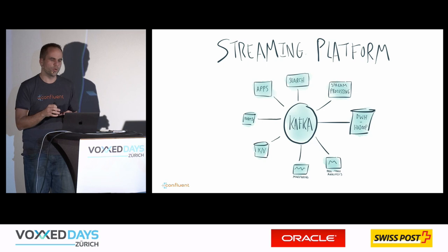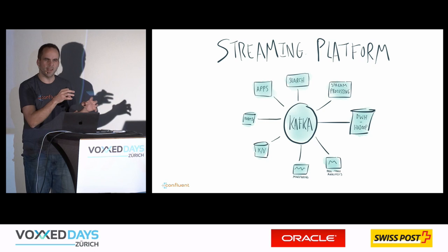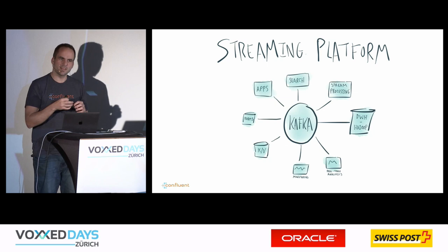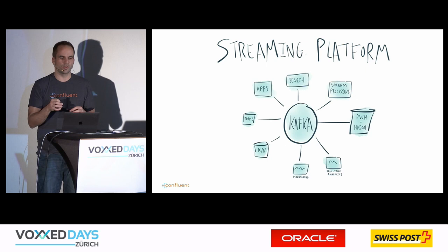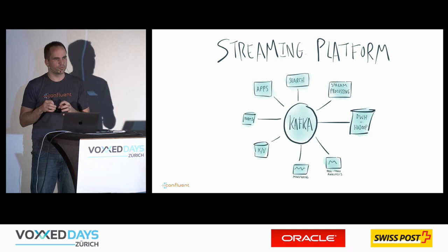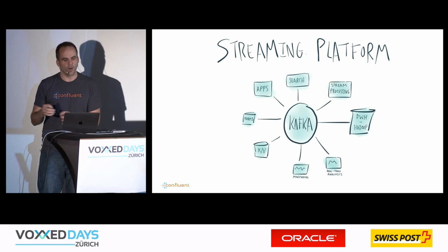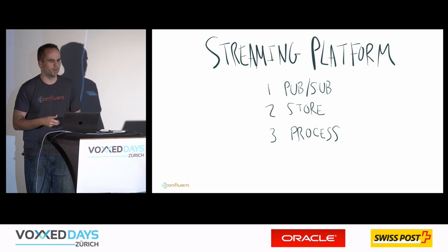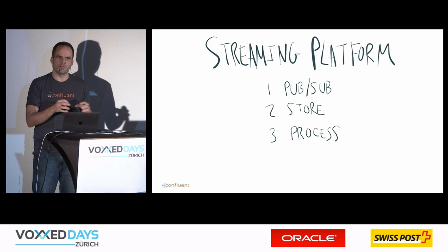That's why we talk about a streaming platform — it's much more than just messaging. You can message, store, and process data in Kafka, and then integrate with any kind of system. It's not just for Hadoop or Spark. Many customers, especially banks and insurance companies, use Kafka to get data out of mainframes and push it into new applications like web or mobile apps, while also reducing mainframe costs.